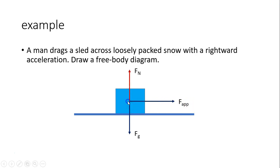So again there's gravity, there's normal force, and there's a rightward force. Then because it's loosely packed snow, there is also friction. This is applied, this way is friction. Now in this case, applied force has to be bigger than friction because you have a rightward acceleration. So you are accelerating that way to the right, so net force has to be to the right.